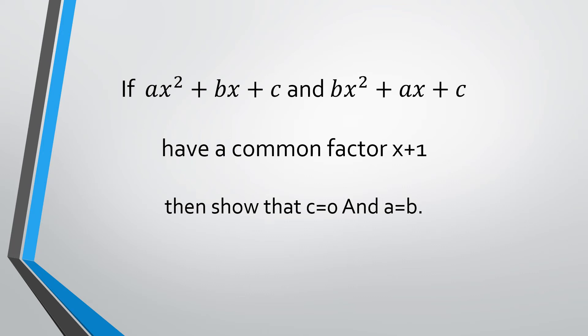Hi friends, welcome to our channel. In this video, let's solve a problem related to factors: if ax squared plus bx plus c and bx squared plus ax plus c have a common factor x plus 1, then show that c is equal to 0 and a is equal to b.